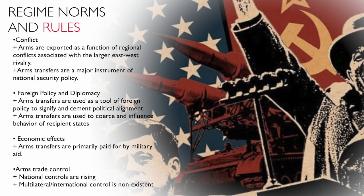As far as regime norms and rules — regarding conflict — arms are going to be exported as a function of regional conflicts associated with the larger East-West rivalry. States are exporting to states in conflict, but essentially those states have to be participating in proxy wars for the ideological dominance of either the U.S. or Russia. Arms transfers are going to be a major instrument of national security policy. Both the U.S. and Russia look at these exports under grant aid as a tool of foreign policy and, more importantly, a tool to guarantee their security within certain areas of the world.